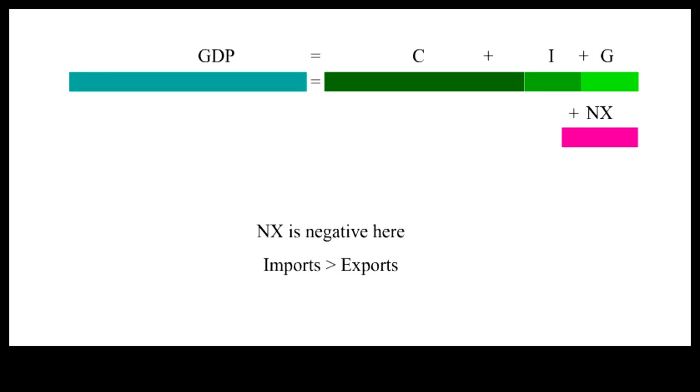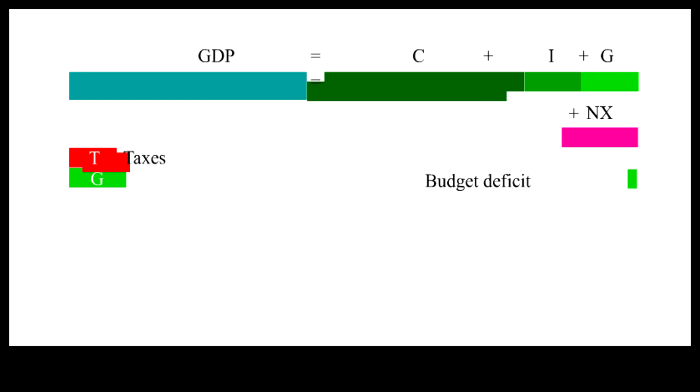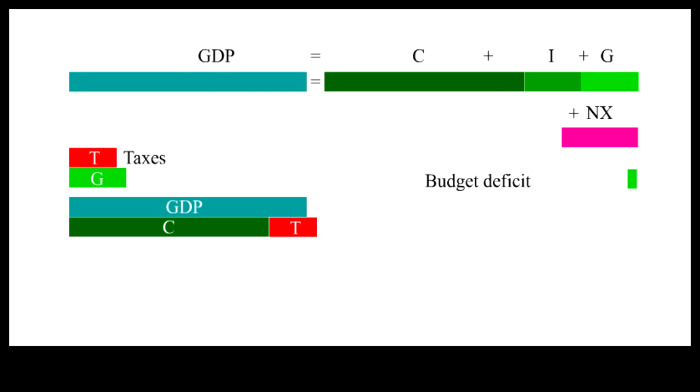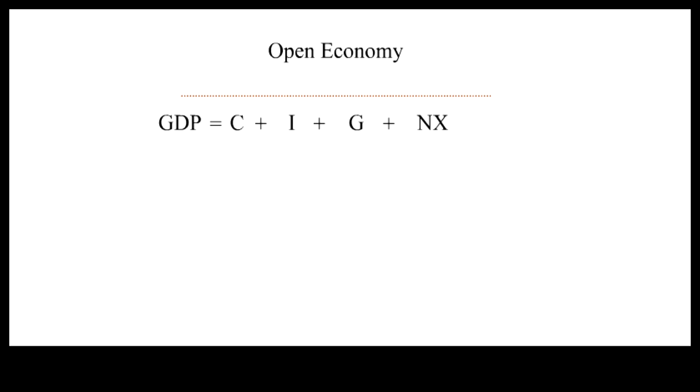To see how negative exports help to fund excess domestic expenditures, let's introduce taxes. Since taxes are lower than government expenditures, negative exports help to fund the budget deficit. Since consumption and taxes together exceed GDP, negative exports also fund negative savings. And since domestic savings is negative, negative exports also help to fund all the investment.